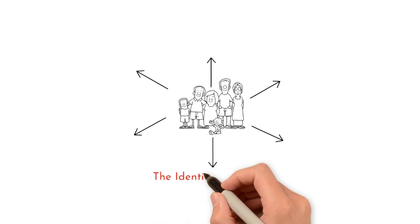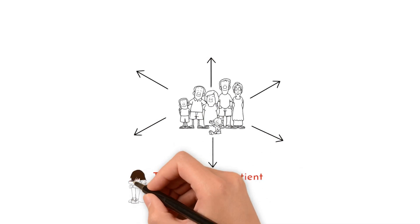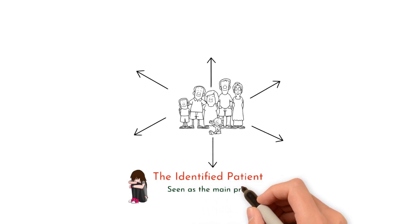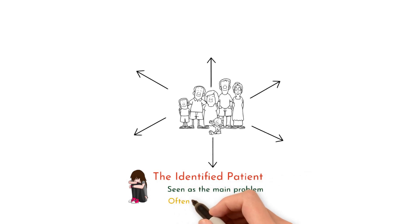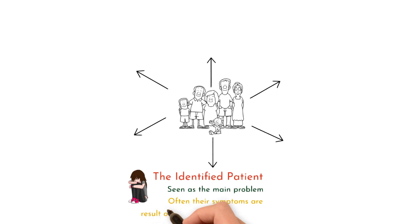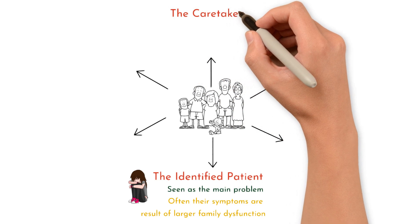1. The identified patient. This is a family member who is seen as the main problem within the family. Often, this individual's symptoms are a manifestation of the larger family dysfunction.